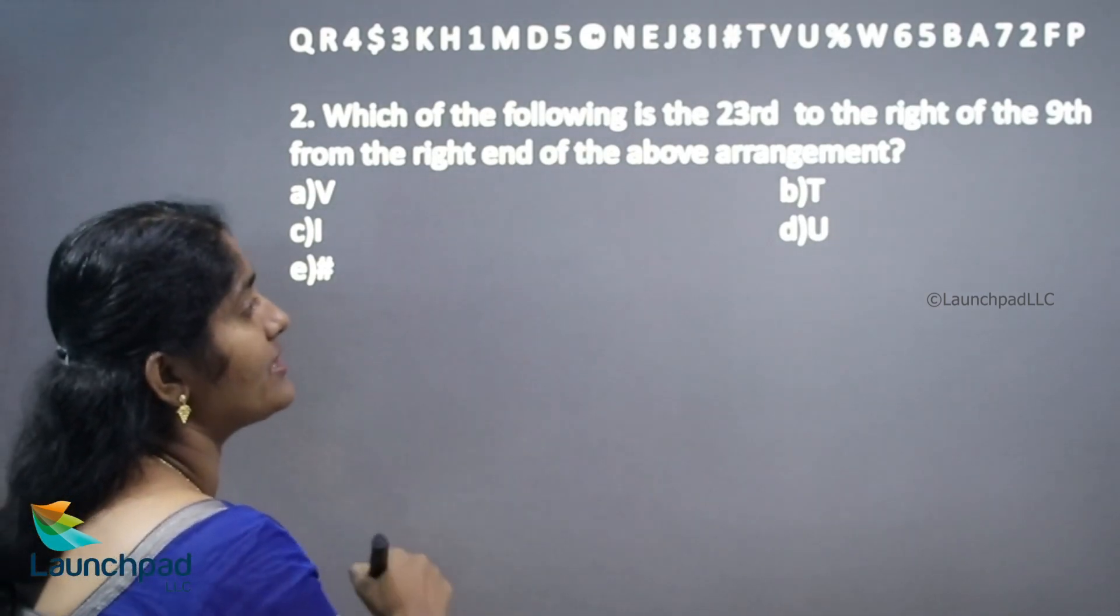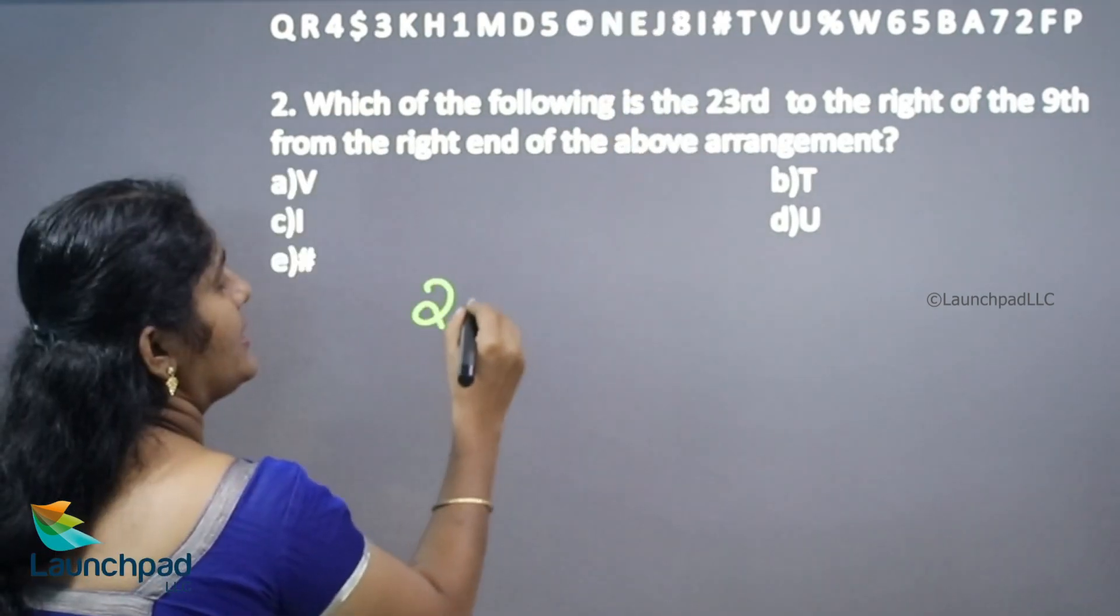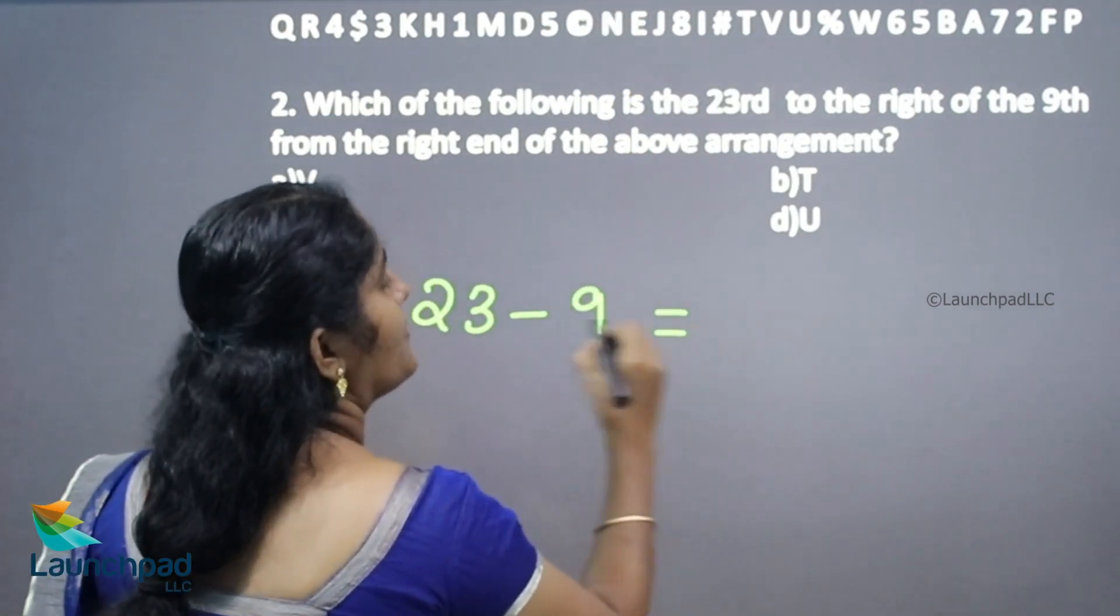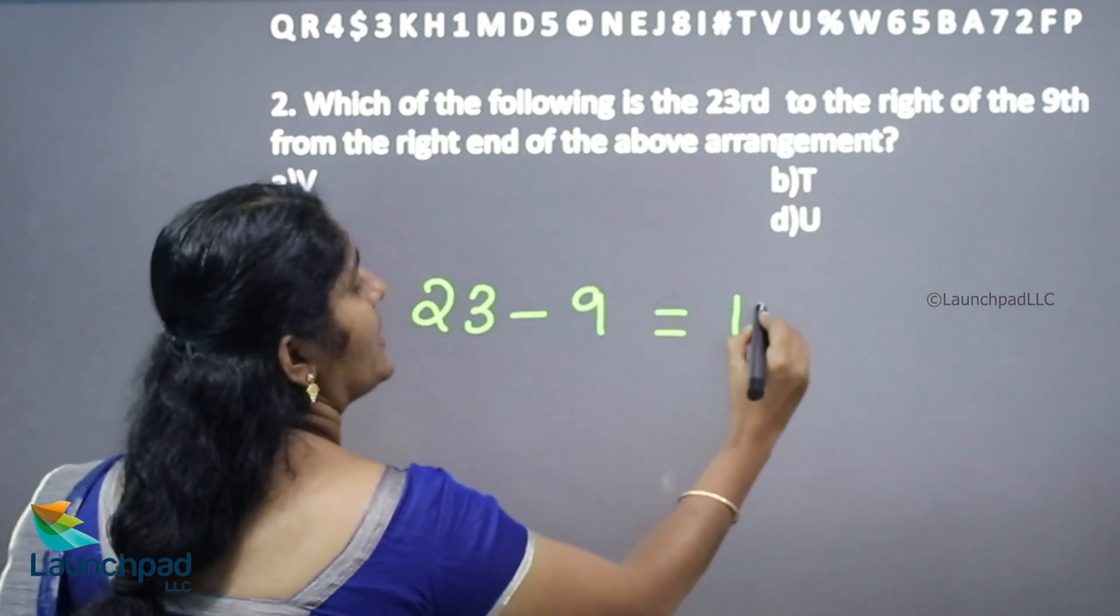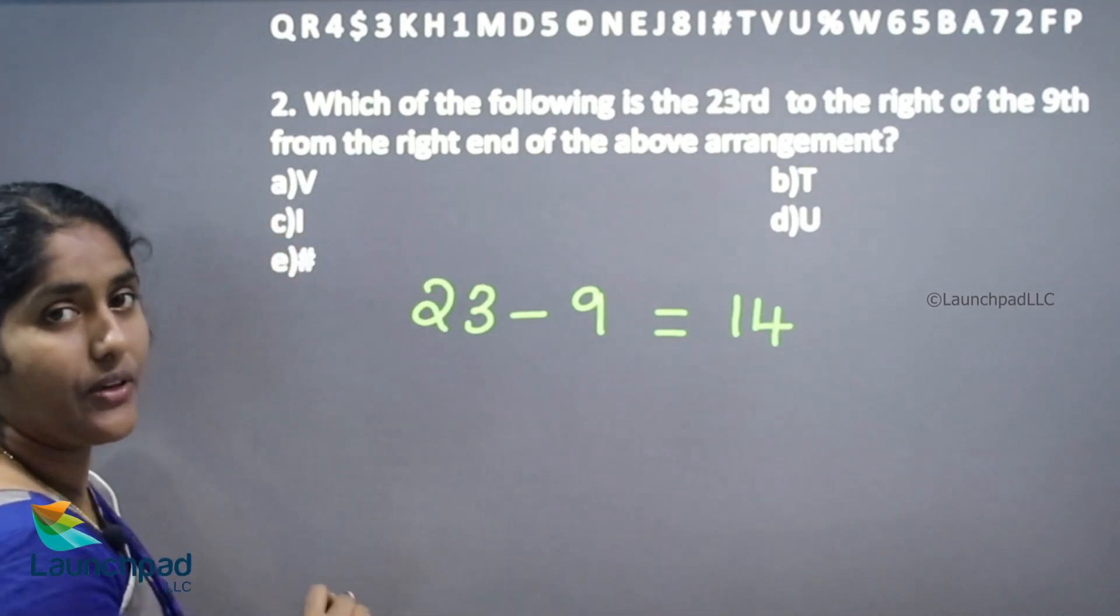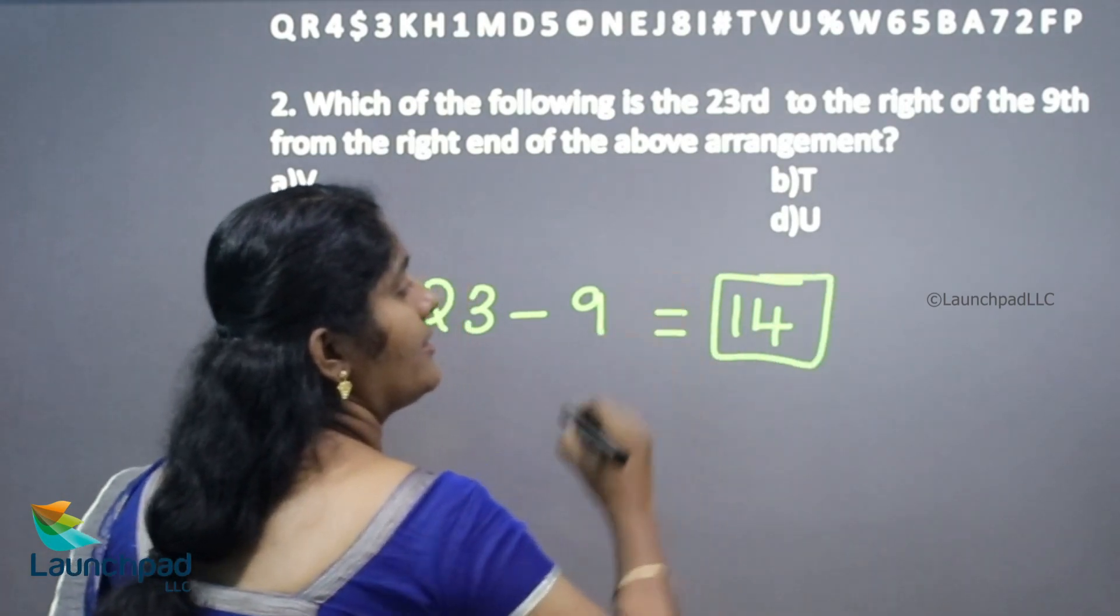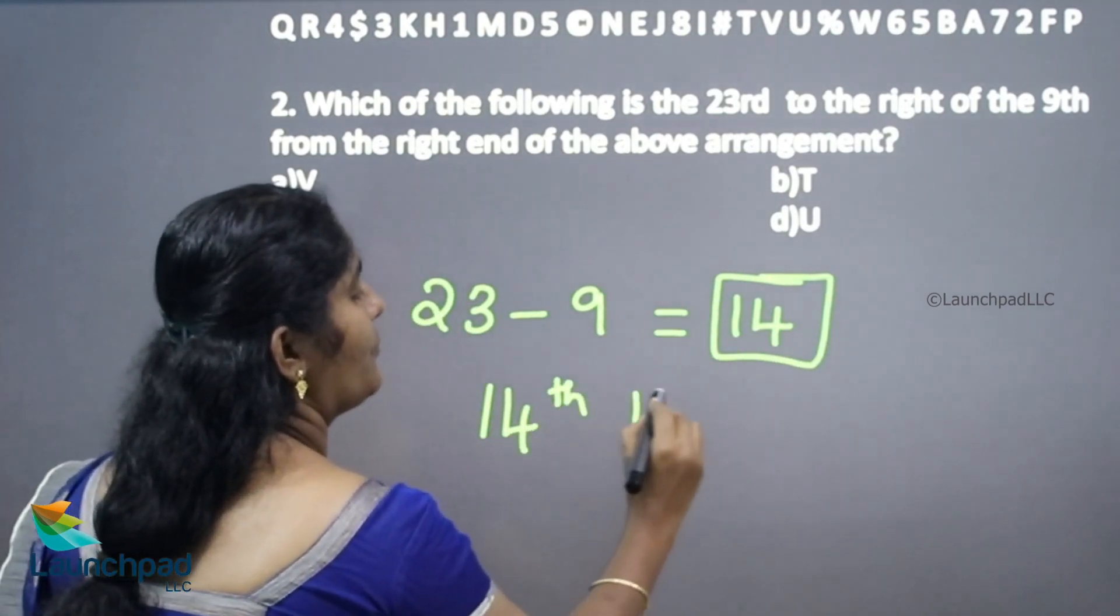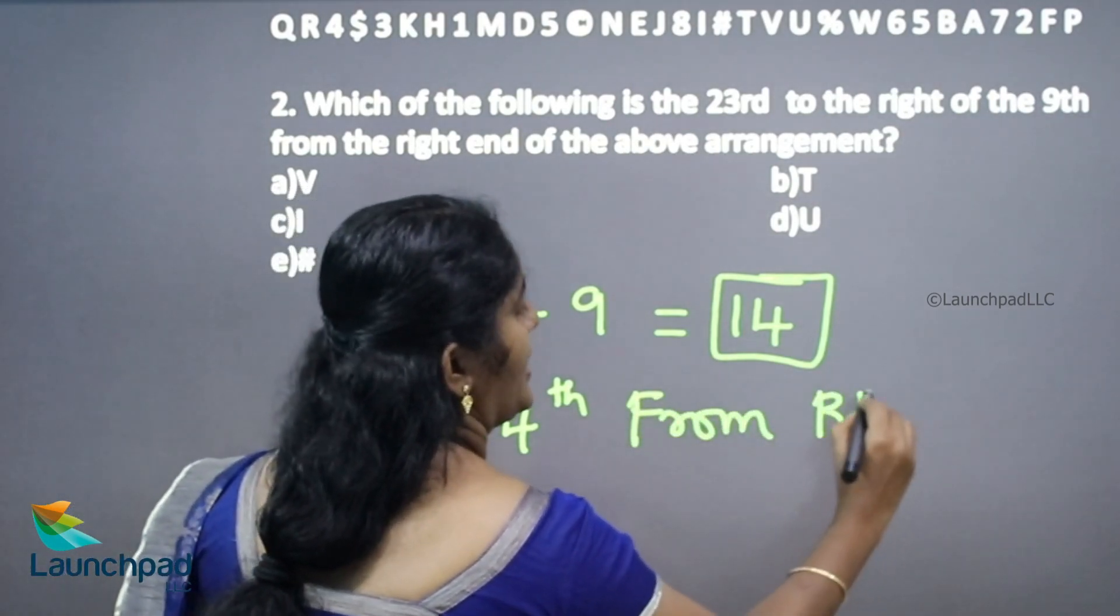What is your difference here? 23 minus 9, that is 14. Now, you want to take 14th element from your right end. 14th from right end.